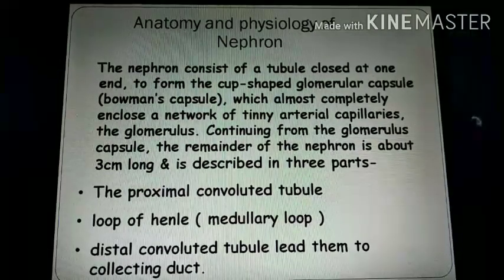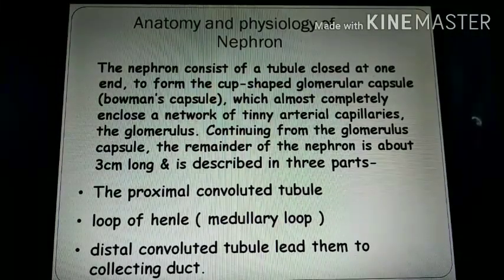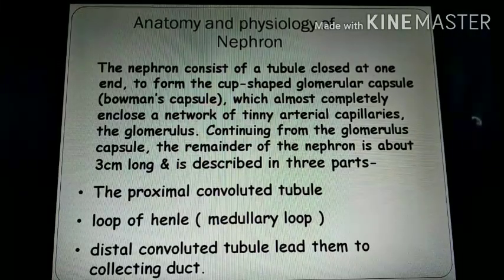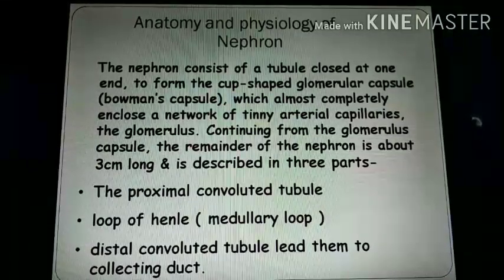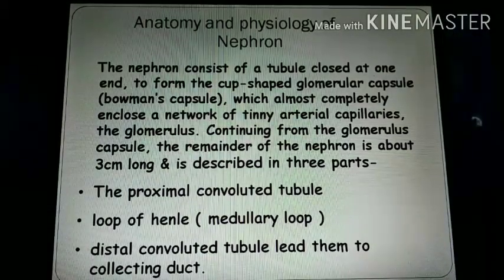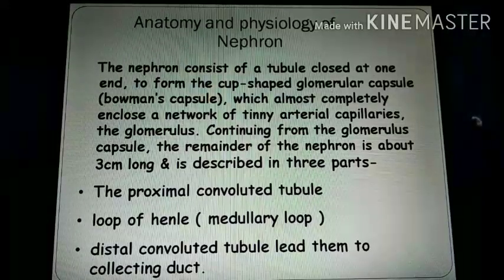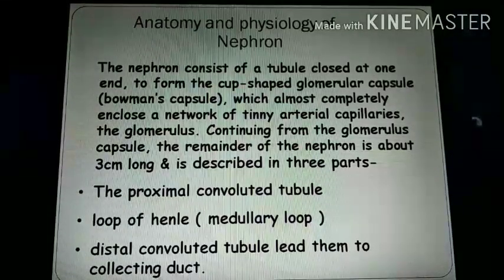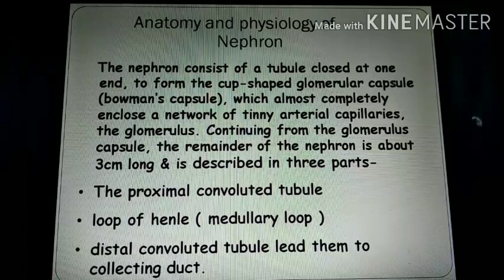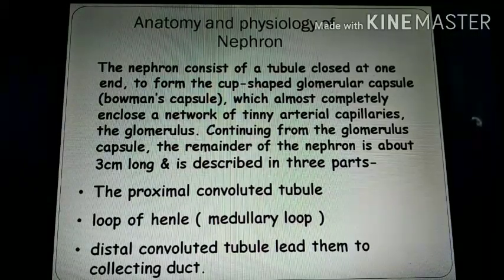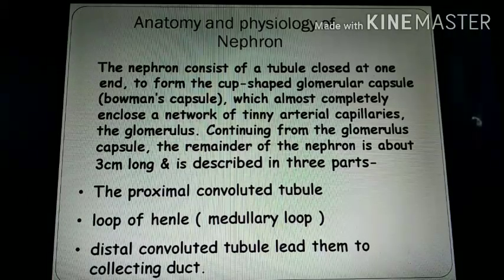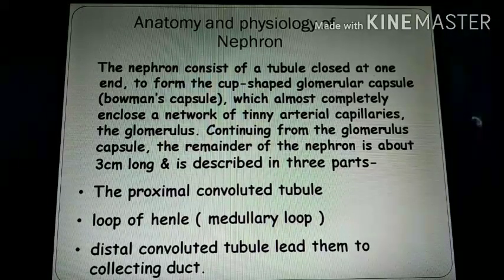After that, the anatomy and physiology of the nephron. The nephron consists of tubules closed at one side. It is a tube-like structure which is closed at one end, and on the other side it is cup-shaped, which is called the glomerular capsule or Bowman's capsule. This glomerular capsule is an almost completely enclosed network of tiny arterial capillaries.